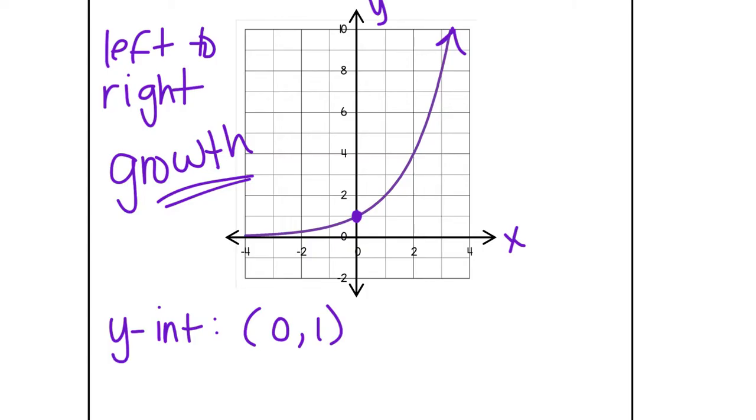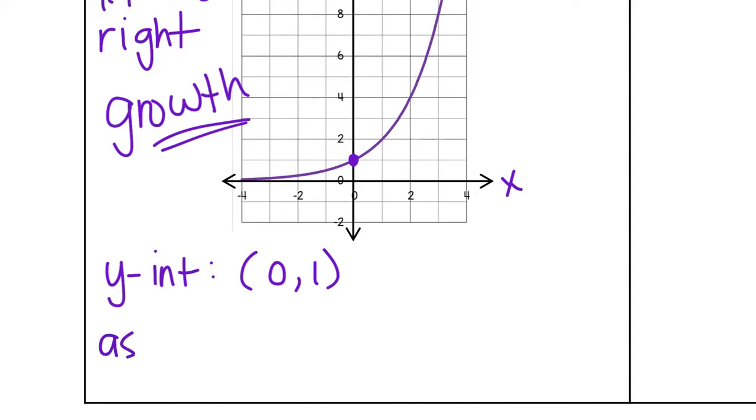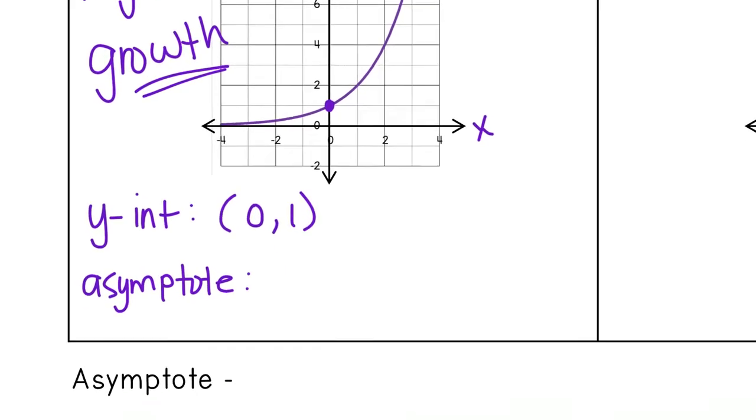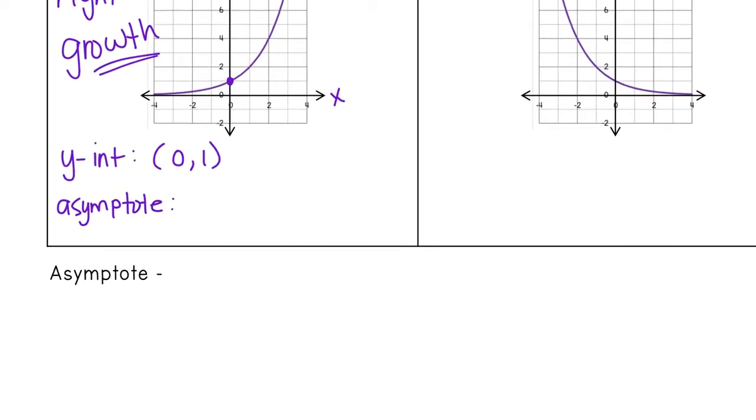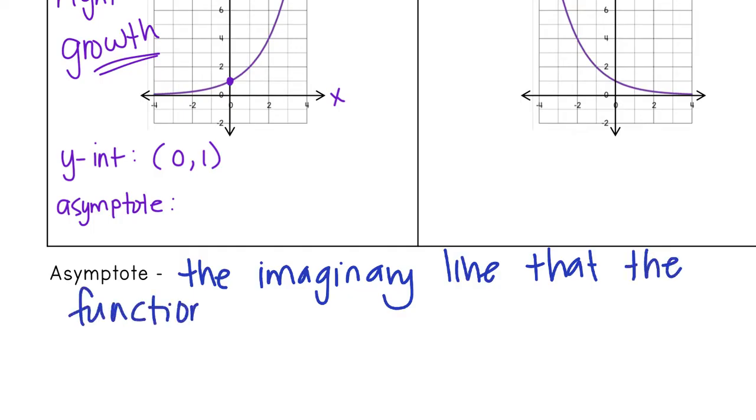One more feature that we haven't talked about yet is something called the asymptote. The asymptote of any graph is the imaginary line that the function approaches but never crosses. So you can think of the asymptote as a fence. So when you're inside an area that's fenced in, you can get close to the fence, but you can't actually go over the fence. You can't go across it.